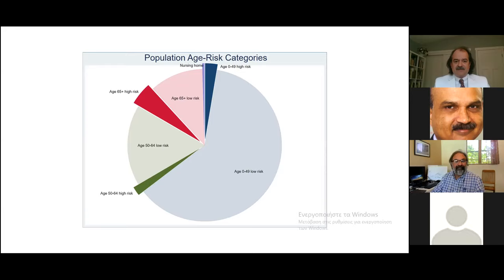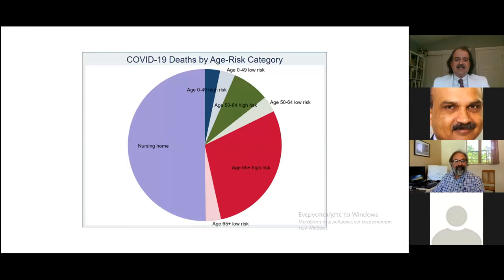Across the entire U.S. population, only about 9% of people are at high risk. A very thin slice — 0.5% of the population — consists of nursing home residents, and they account for 50% of all COVID-19 deaths. About 92% of deaths occur in that 8% of people who are at very high risk. If we could protect that 8% of the population, we would avoid 92% of the deaths.